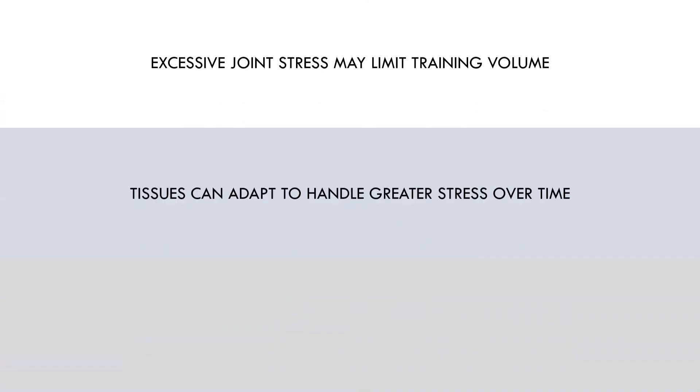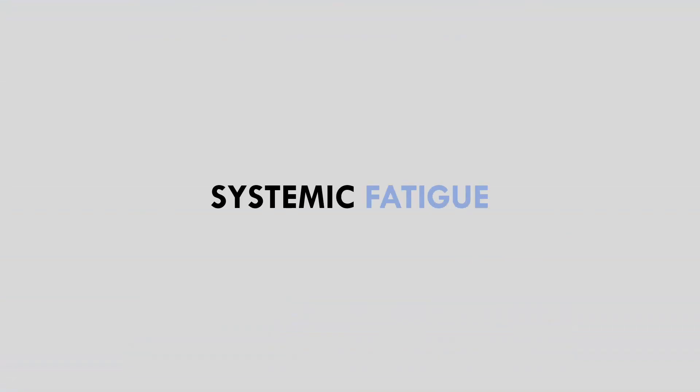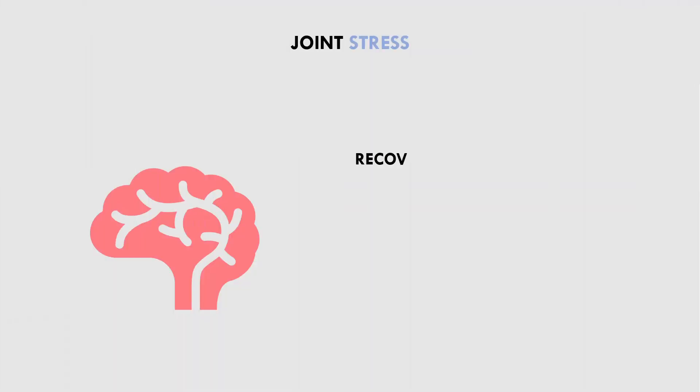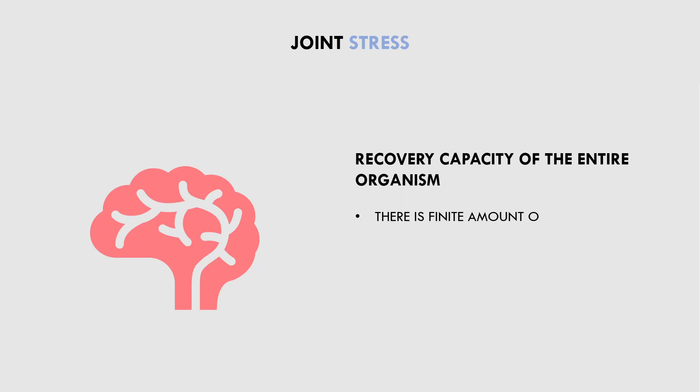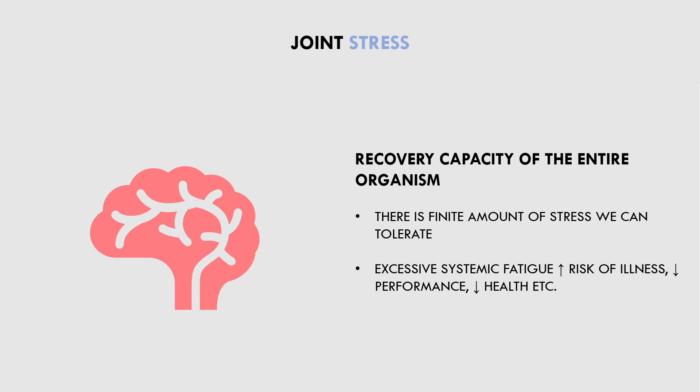The second form of fatigue is systemic fatigue. Systemic fatigue is a very vague and non-specific concept referring to the recovery capacity of the entire organism, including all forms of stress. Like the principle of joint tolerance, there is only a finite amount of stress individuals can handle at any given point in time, and breaching this threshold will have negative health and performance consequences. Breaching systemic capacity will increase the risk of illness, inhibit lifting performance, and have negative effects on hormone regulation and essential bodily functions.